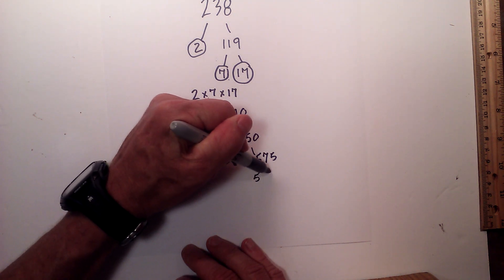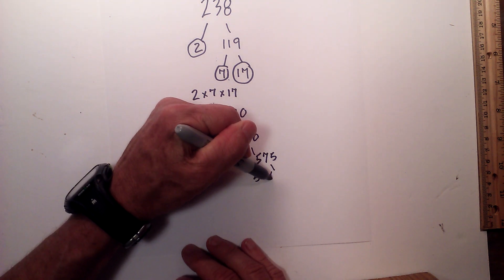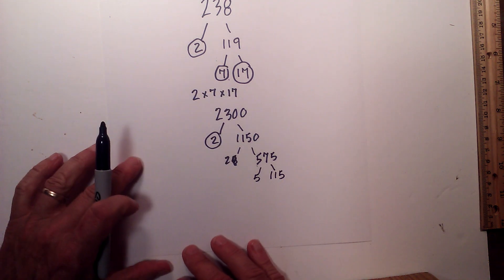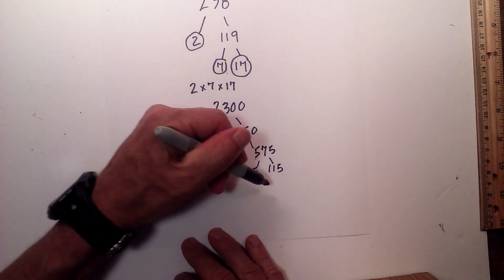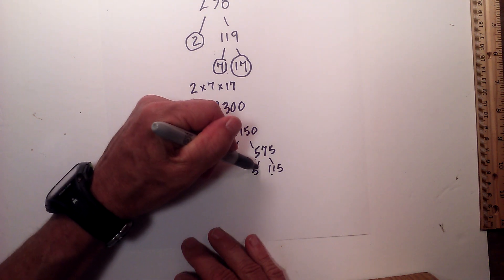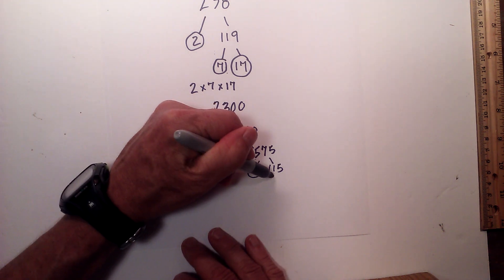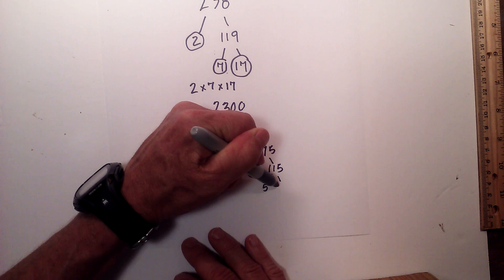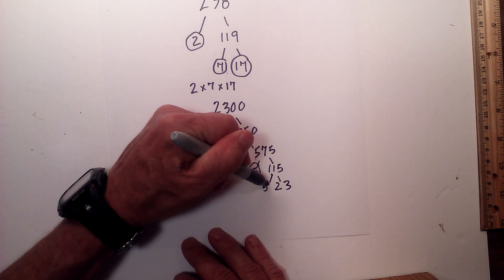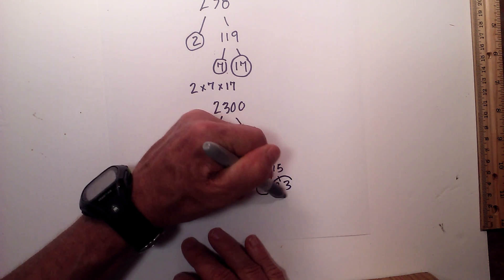Now 5 times 115 equals 575. Circle the 5 because it is prime. Circle the 2 because it is prime. And then finally 5 times 23 is equal to 115, and they were both prime.